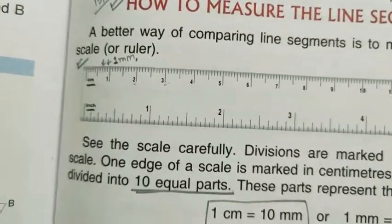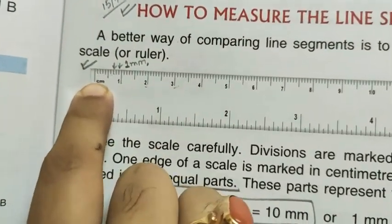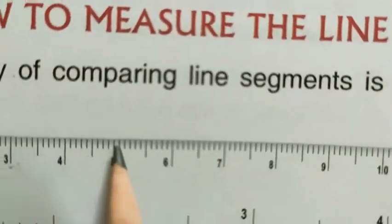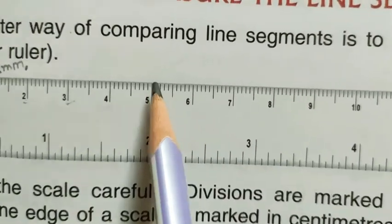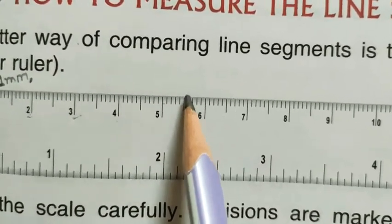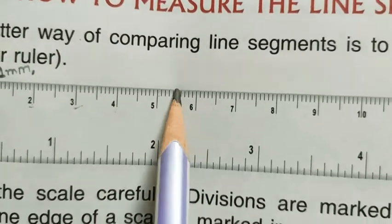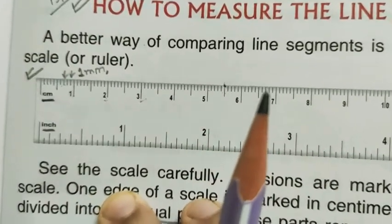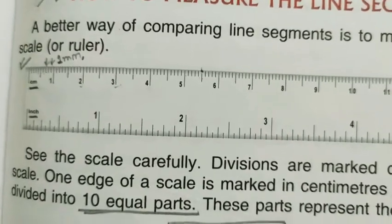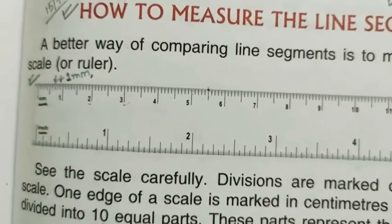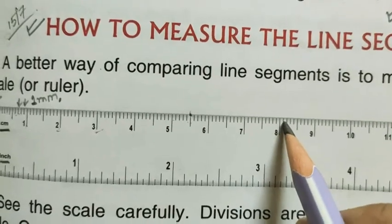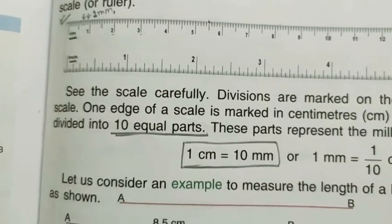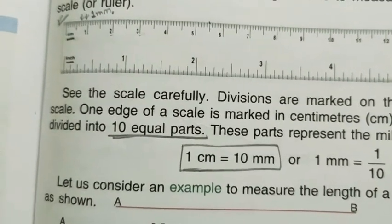If we have to draw 8.2 cm, then after 8, 0.2 means two small divisions. 0.2 means 2 mm, clear?